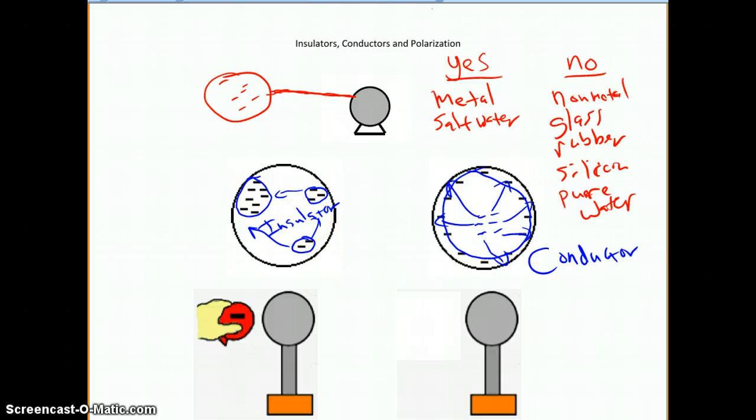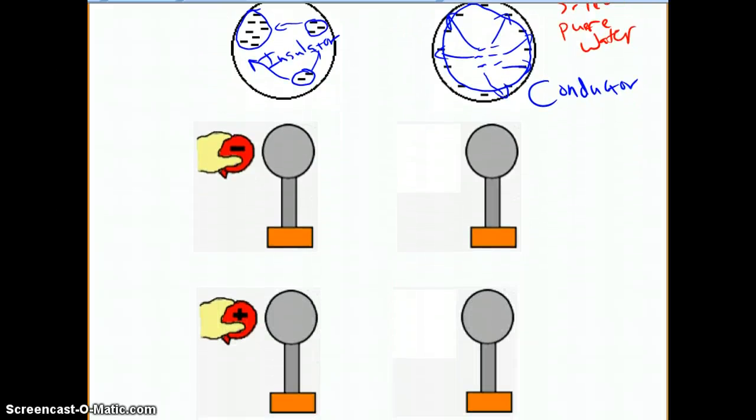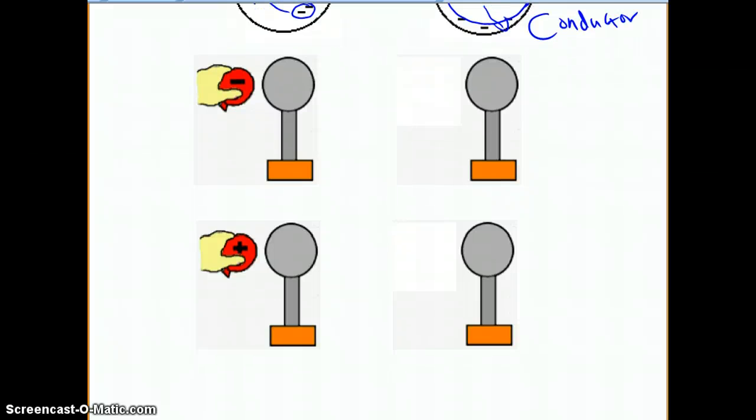Alright, now specifically in conductors, usually this works best in conductors, but it will work in anything to a certain extent. We can polarize the charge. Now all that means is we're going to create two separate poles, one pole positive and one pole negative.